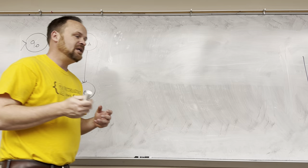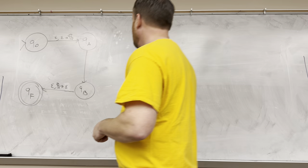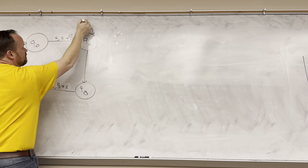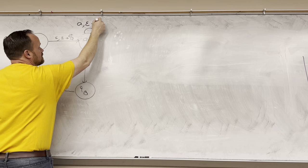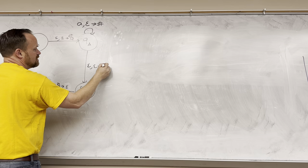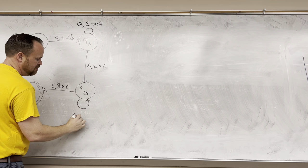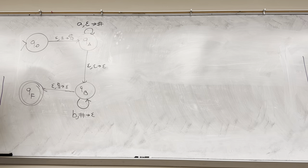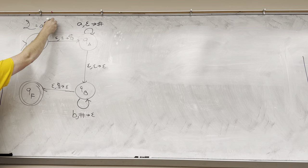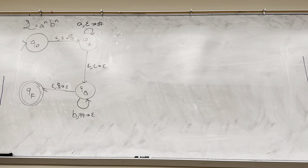PDAs are inherently non-deterministic. In our first example, we had a single loop where for every A we read from the input string, we didn't pop anything but pushed a pound sign. We took the transition from A's to B's non-deterministically, and for every B, we popped off a pound and didn't push anything. Moodle sent out a notification that class was canceled — it totally wasn't canceled, so you're in the right place.